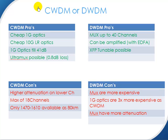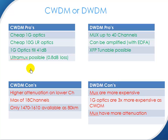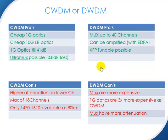This is always a big question: CWDM or DWDM? In short, the advantages of CWDM are that the 1 GB and 10 GB are cheaper, you've got cheaper LRs, 1 GB optics can go up to 41 dB, and ultra MUXes are possible. The disadvantages: you have a max of 18 channels, and only the 1470 to 1610 range is available as 80 km for 10 GB. The advantage of DWDM is you can amplify it and use 40 up to 80 channels. XFP tunable DWDM is also possible. The disadvantages: the MUXes are more expensive, the 1-gig optics are more expensive, and the MUXes have a bit more attenuation.